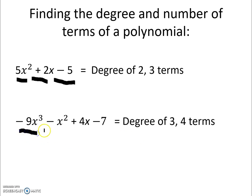When we're counting terms there's 1 there, 1 there, 1 there, and the 4th one is here. So this polynomial has a degree of 3 and 4 terms.